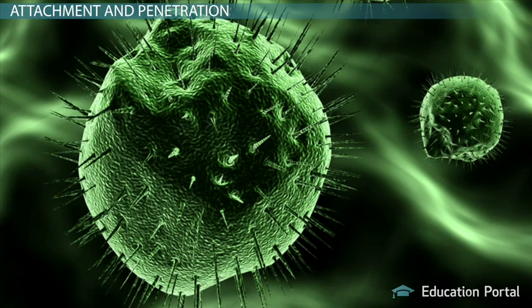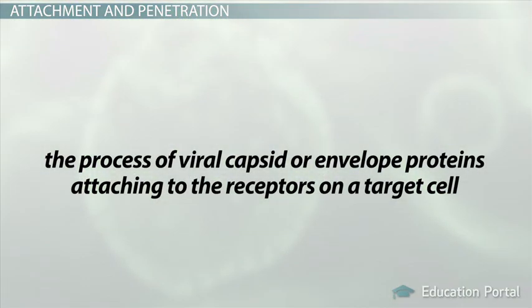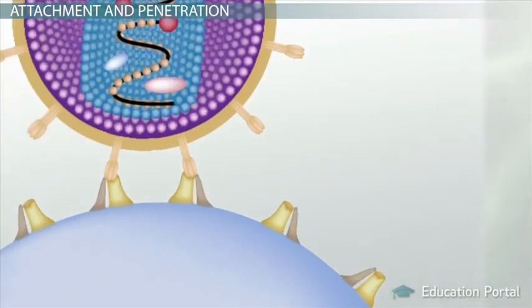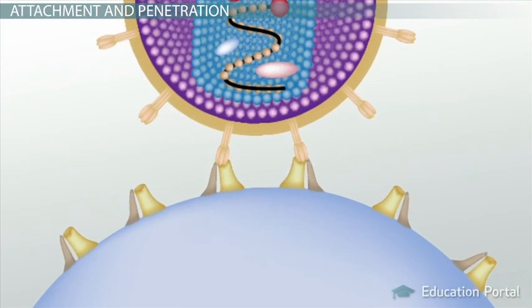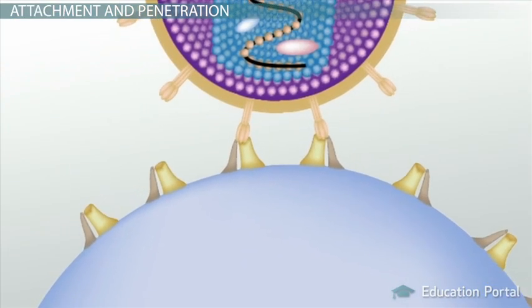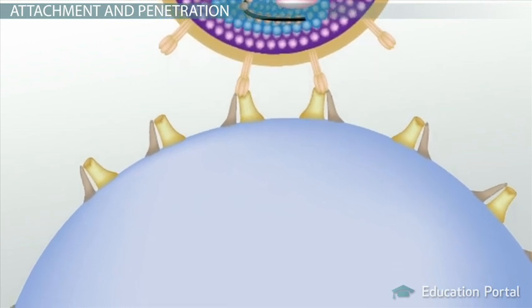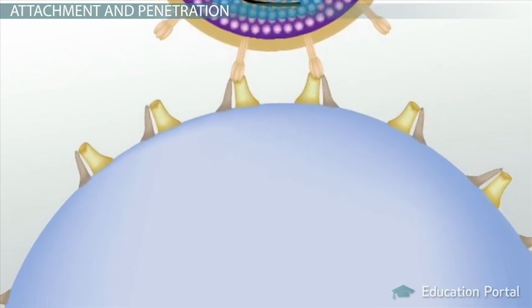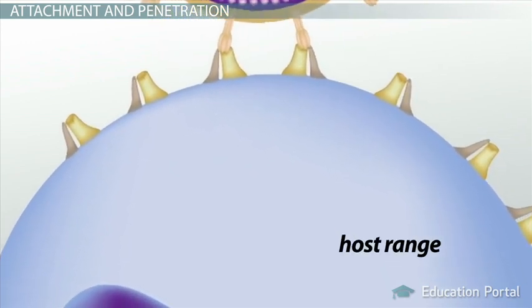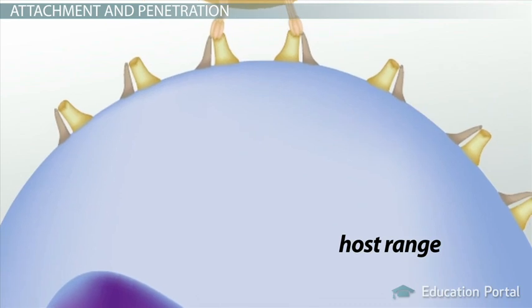This process — the process of viral capsid or envelope proteins attaching to the receptors on a target cell — is termed, not surprisingly, attachment. The specific set of cells or entities upon which a virus can successfully attach to is known as its host range.